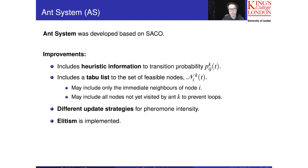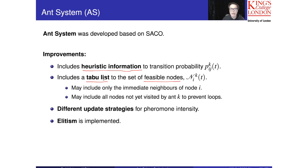The first improvement is the transition probability. When we calculate the probability Pij, we are going to use some heuristic information. When we consider the feasible nodes, we can have a taboo list — a control about which node we can visit or which node we can't. We will also have a different update strategy, where we update the tau value to include extra information about elitism.